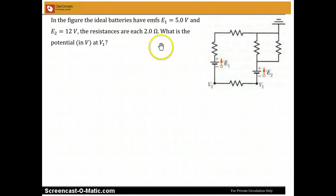In the figure, there are ideal batteries. E1 has an EMF of 5.0 volts and E2 has an EMF of 12 volts.